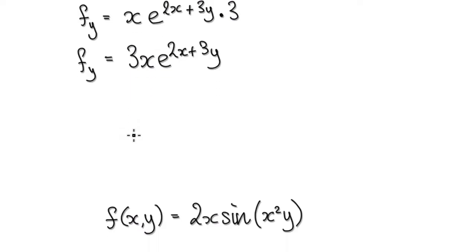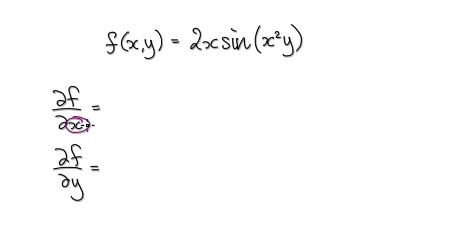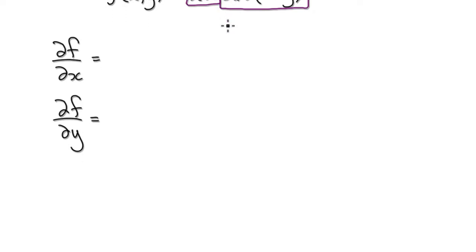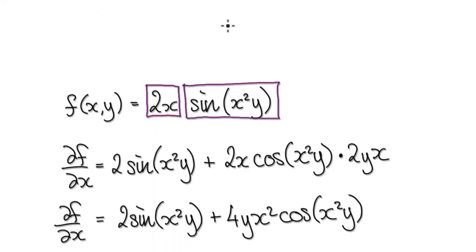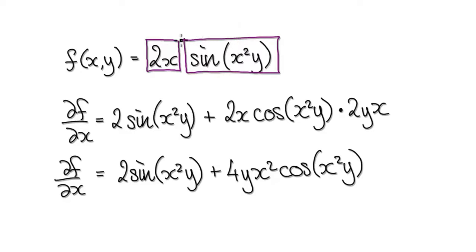OK, so next one. Find the partial derivative of this function with respect to x and with respect to y. Press pause and have a go. So to do this, imagine this as one block multiplying another block. We're doing it with respect to x. This block here contains x, so it's a variable. This block here also contains x, so it's also a variable. So we've got to use the product rule.